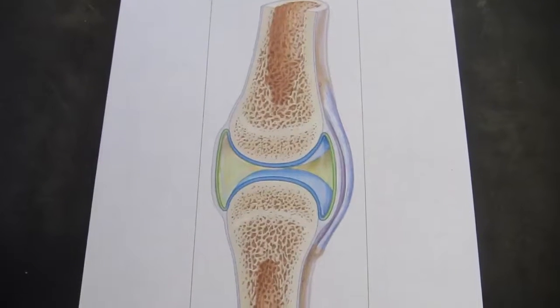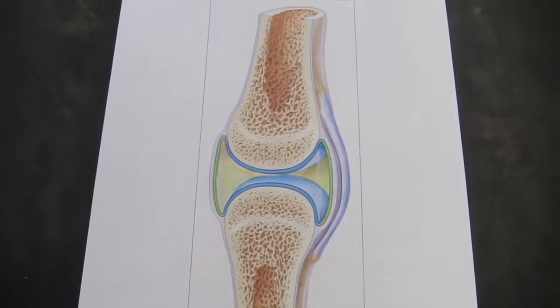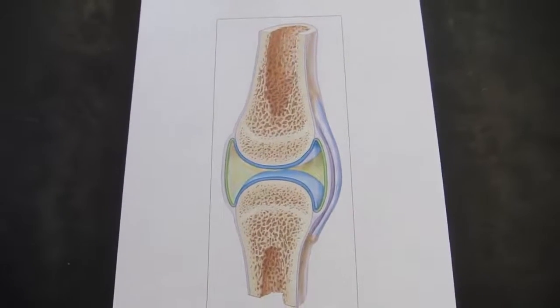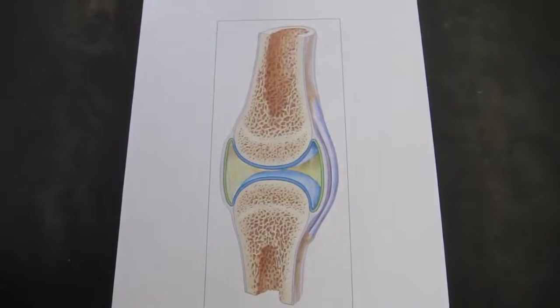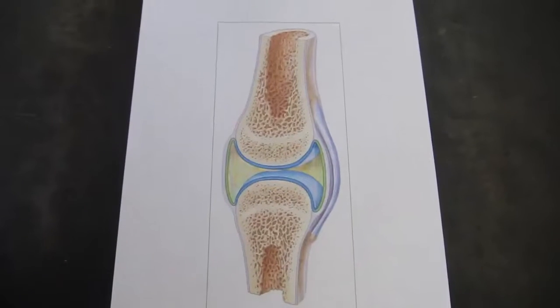All synovial joints are functionally classified as diarthrotic. So if you see a synovial joint, it is always going to be considered freely movable. And we'll talk about what freely movable means as we start looking at the individual synovial joint models that we have.